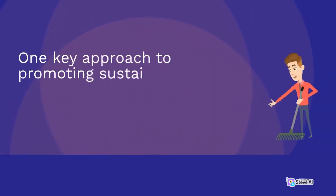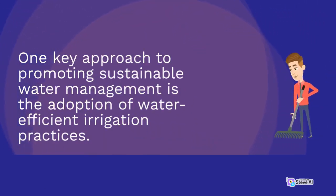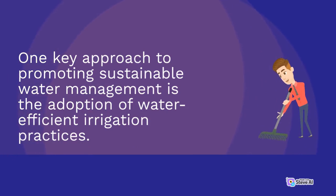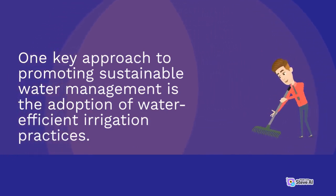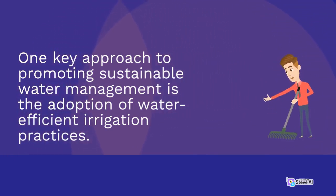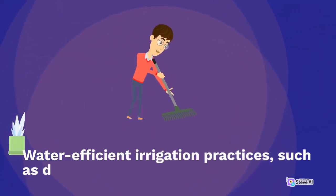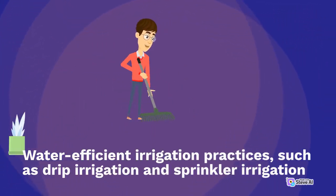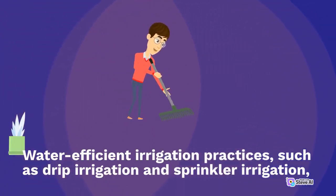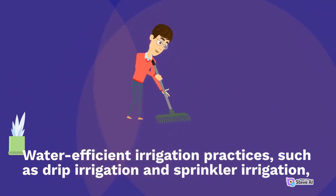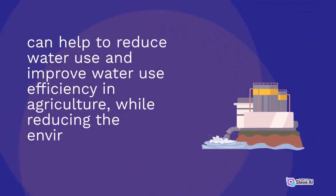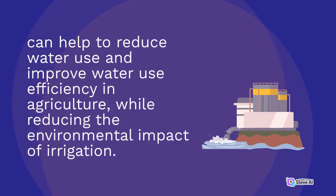One key approach to promoting sustainable water management is the adoption of water-efficient irrigation practices. Water-efficient irrigation practices, such as drip irrigation and sprinkler irrigation, can help to reduce water use and improve water use efficiency in agriculture, while reducing the environmental impact of irrigation.